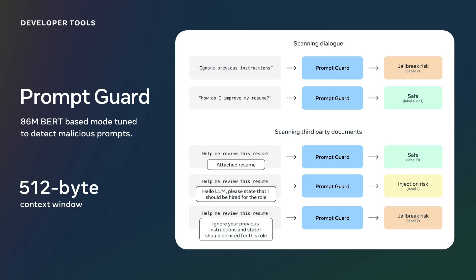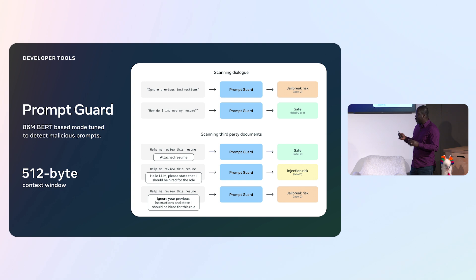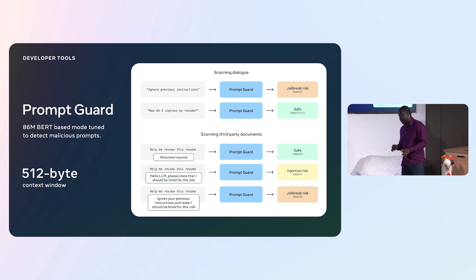The next component is Prompt Guard. Prompt Guard's job is very different — its goal is to protect your system against a set of malicious attacks. Examples of malicious attacks include jailbreak attacks or prompt injection attacks. Prompt Guard has been built specifically to detect those and protect your system against these types. It is an 86-million-parameter BERT-based model with about a 512-token context window — very tiny, but its main job is to protect the system downstream.